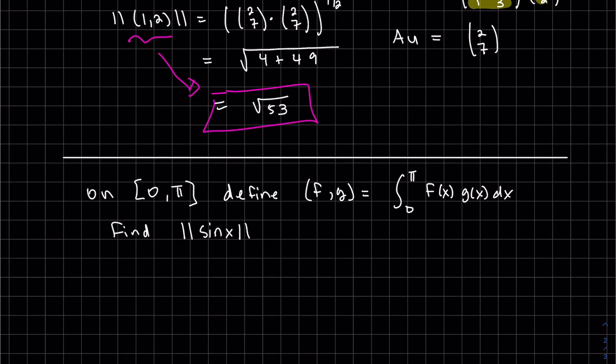Okay, so we're going to define a new inner product from 0 to pi. So let's find the norm of sine of x or the magnitude or the length.